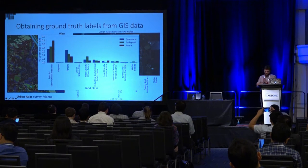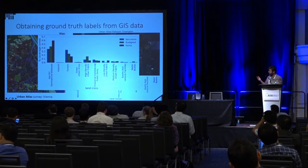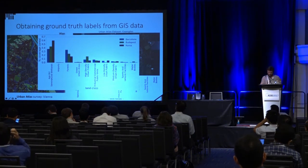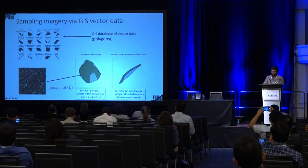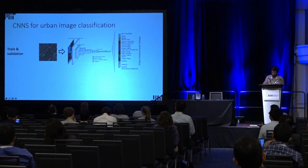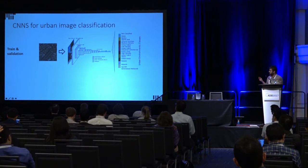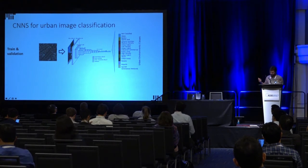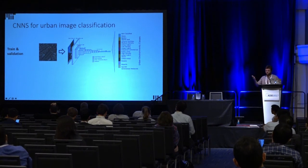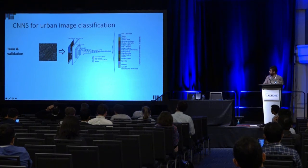One challenge is that these land use classes are quite imbalanced — there's a lot more agricultural land, airports, etc. — so the training algorithm has to account for that. The training of models is quite standard. We use two vision models — VGG16 and ResNet50 — that perform well on classification benchmarks. We pre-trained them on the Deep South data, then fine-tuned on the Urban Environments Dataset to predict 10 land use classes.